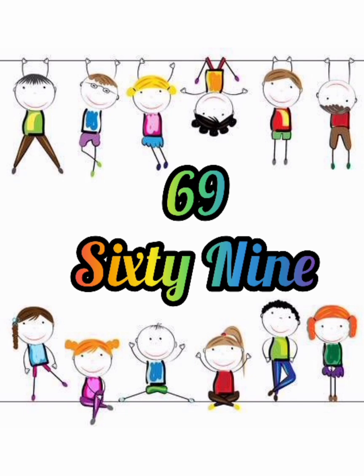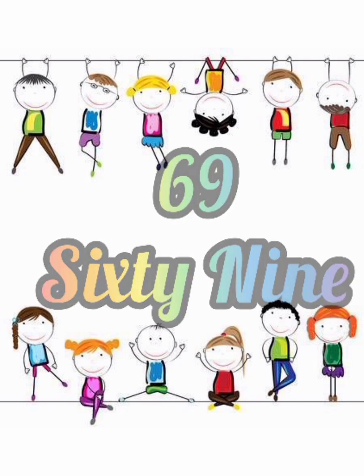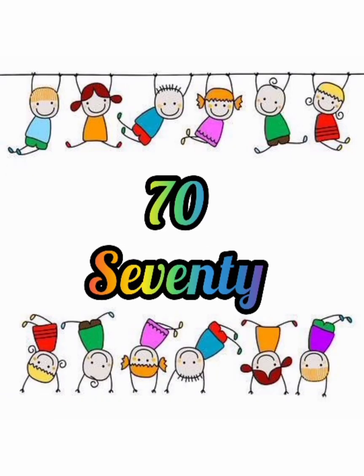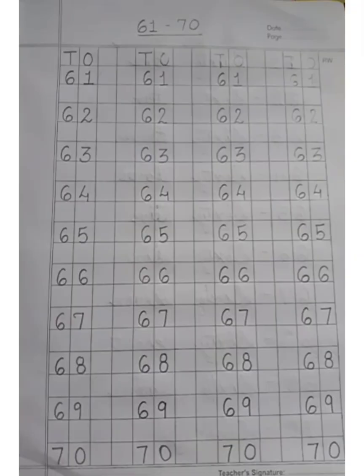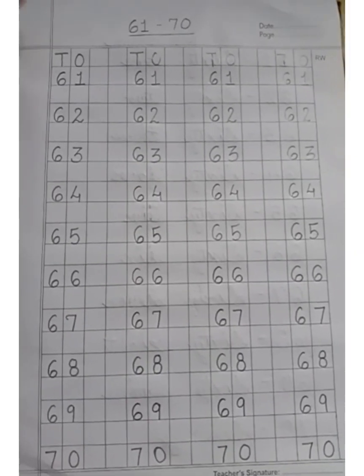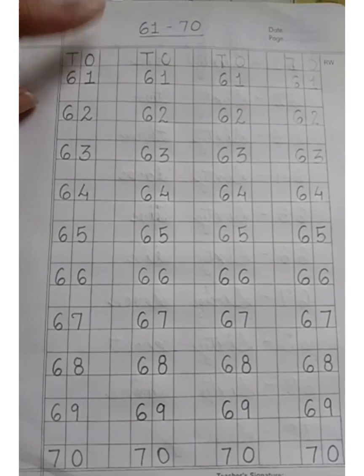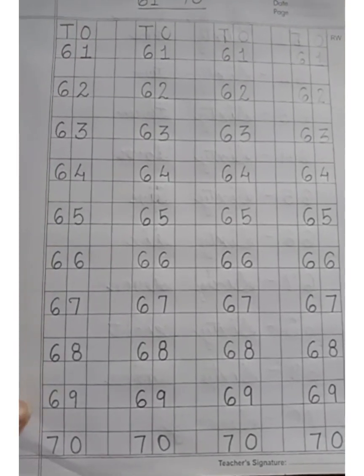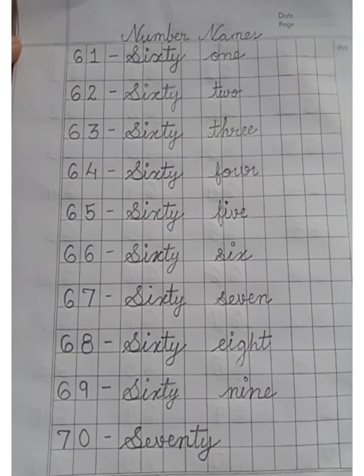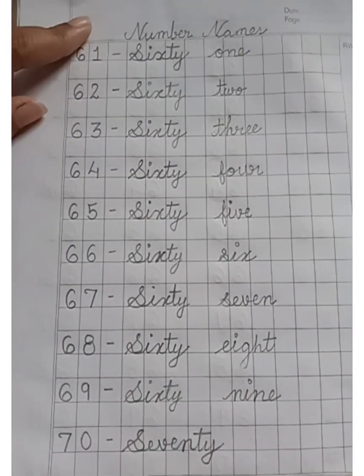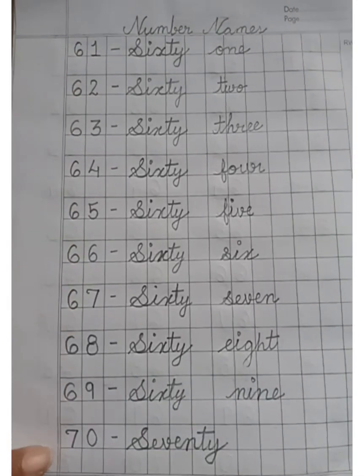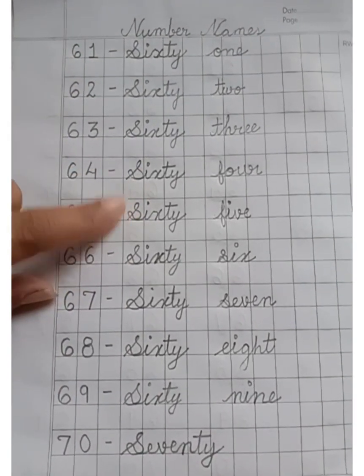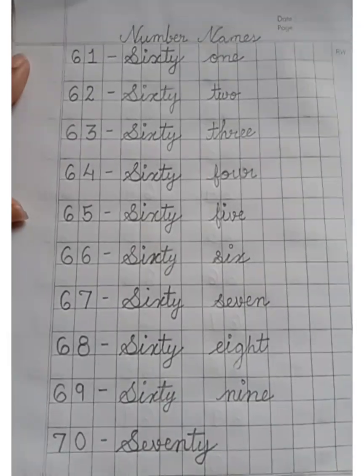69 — sixty-nine. 70 — seventy. Children, write 61 to 70 like this, and write number names 61 to 70 in cursive like this in your copy. Thank you, children.